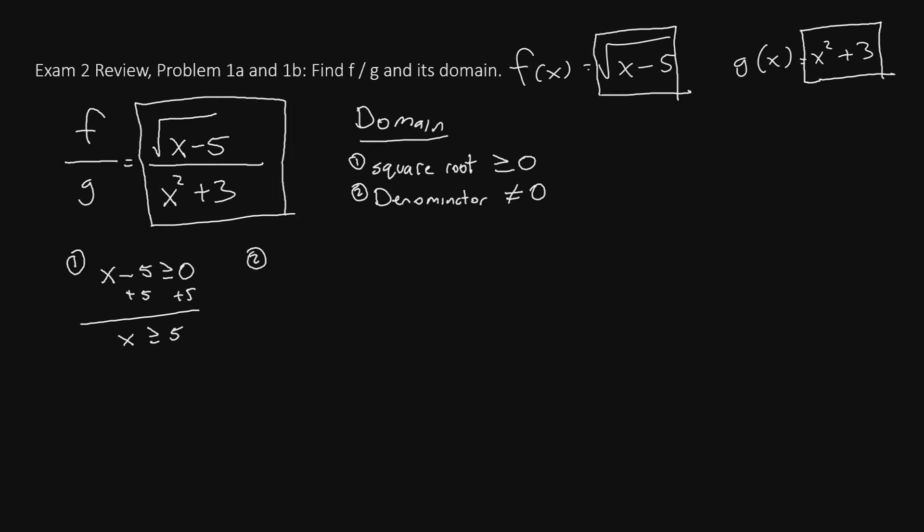For part 2 of the domain, we'll have x squared plus 3 is not equal to 0. Let's subtract the 3 over to the other side. If we do this, we'll have x squared is not equal to negative 3. Now take the square root of both sides. If we take the square root, we'll have x is not equal to square root of negative 3. However, having a negative underneath a square root gives you a non-real number.